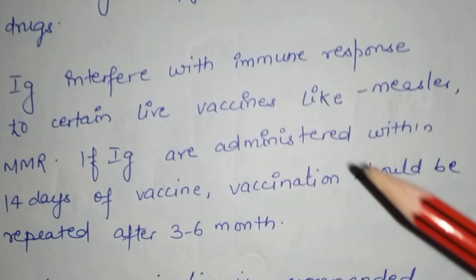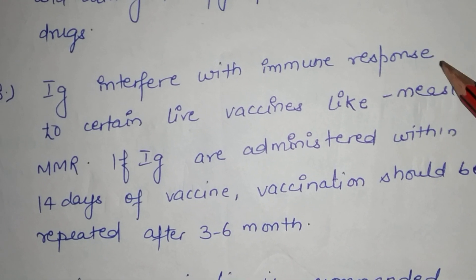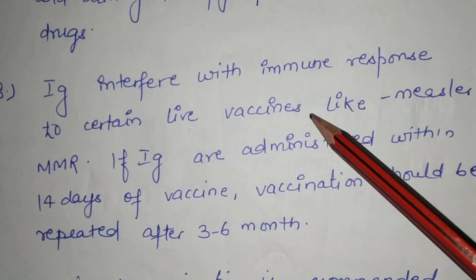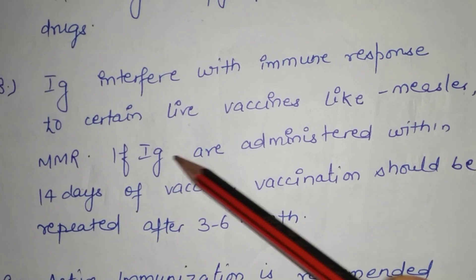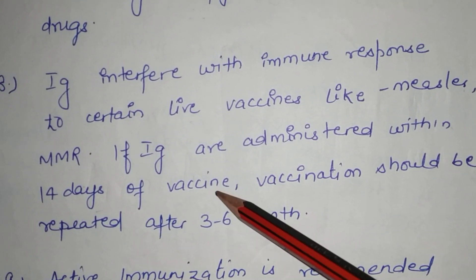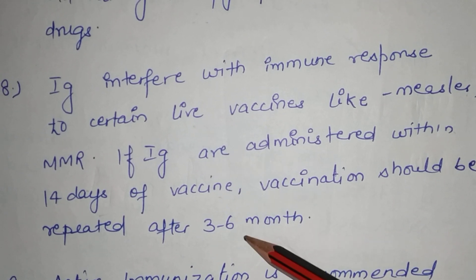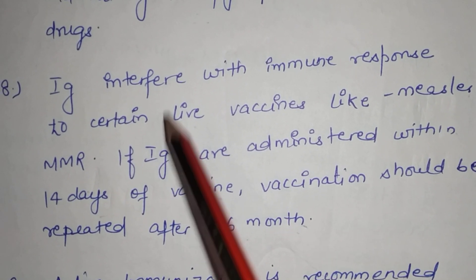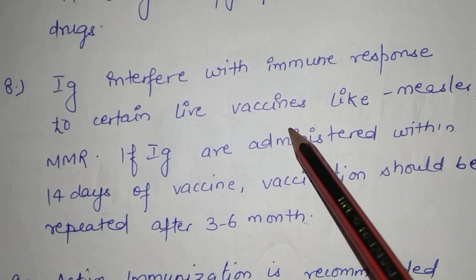The next principle is: immunoglobulin interferes with the immune response to certain live vaccines like measles and MMR. If immunoglobulin is administered within 14 days of vaccination, the vaccination should be repeated after 3 to 6 months, because immunoglobulin interferes with live vaccines.